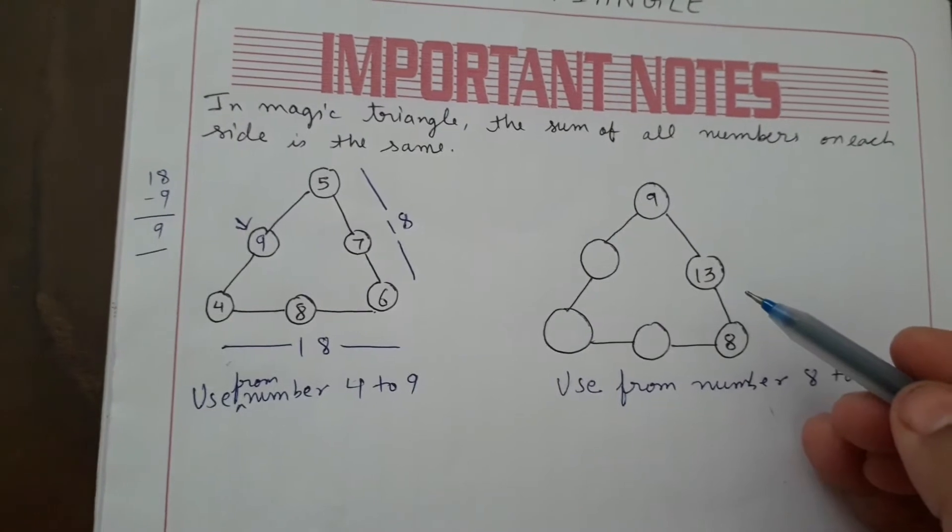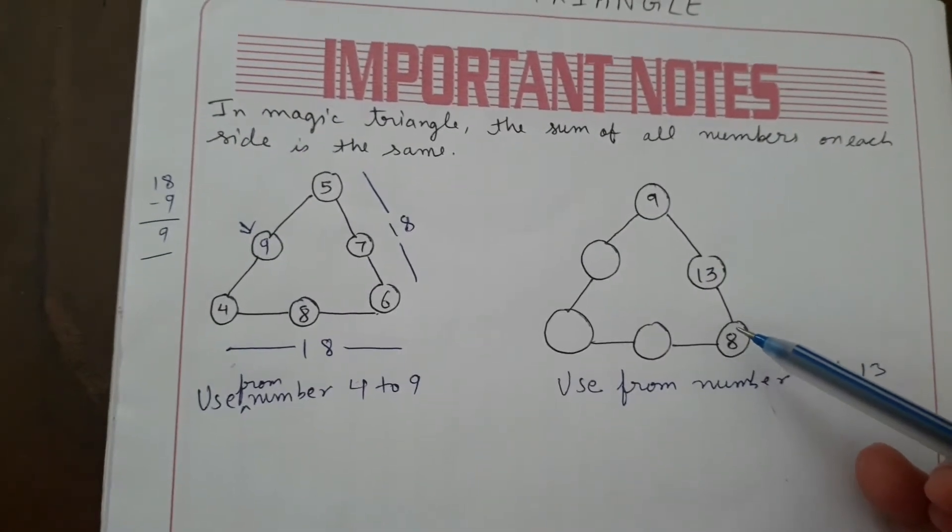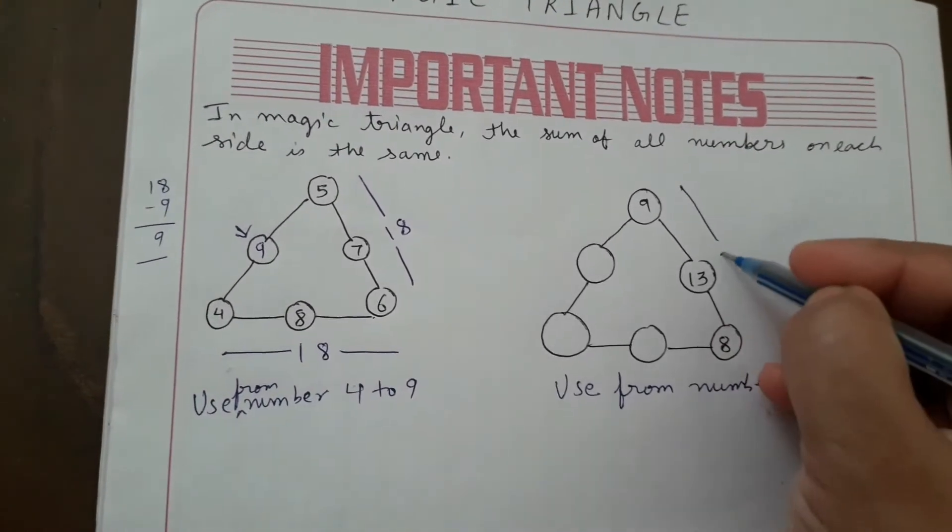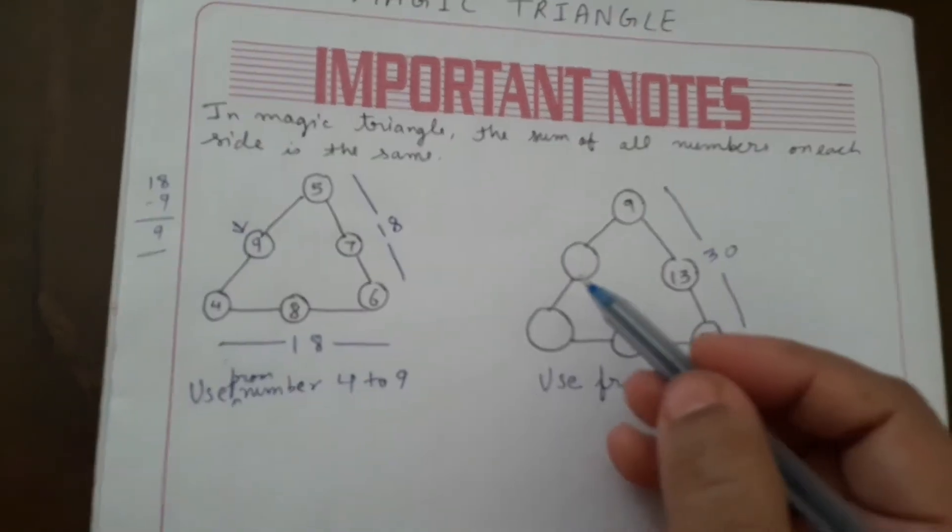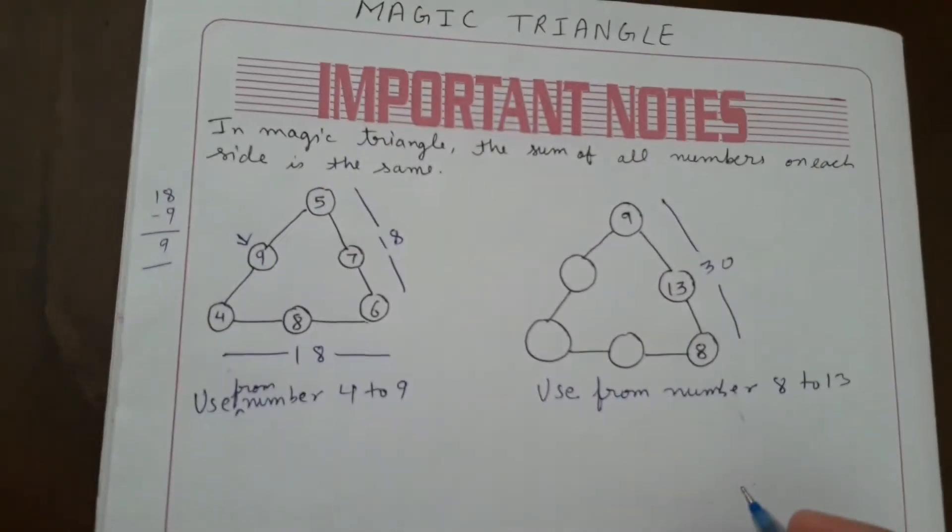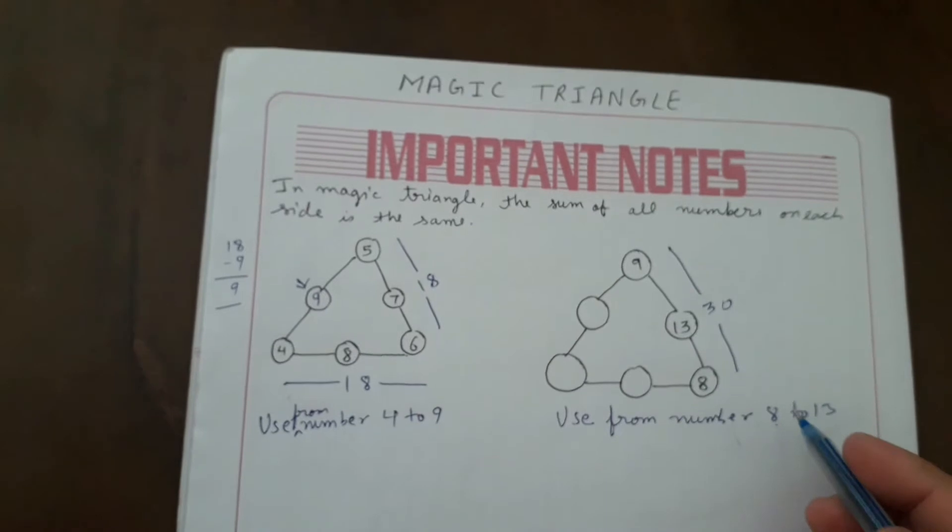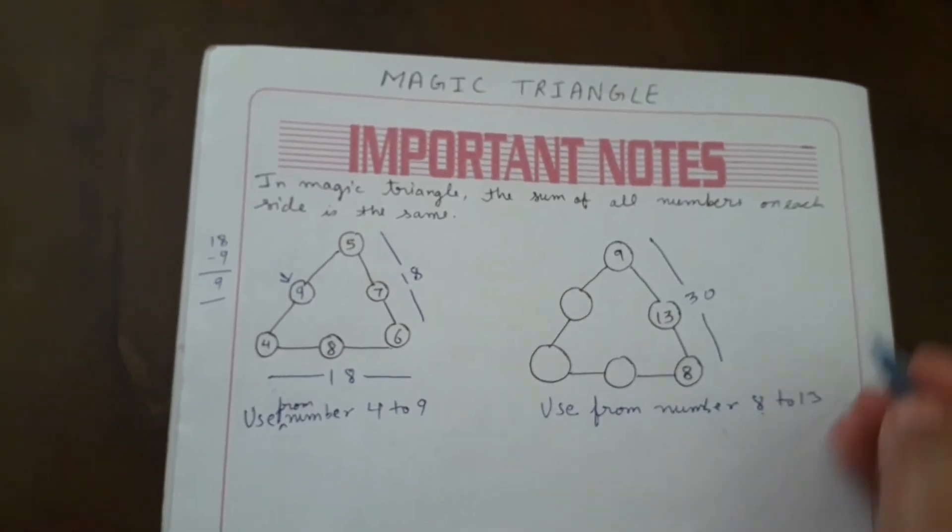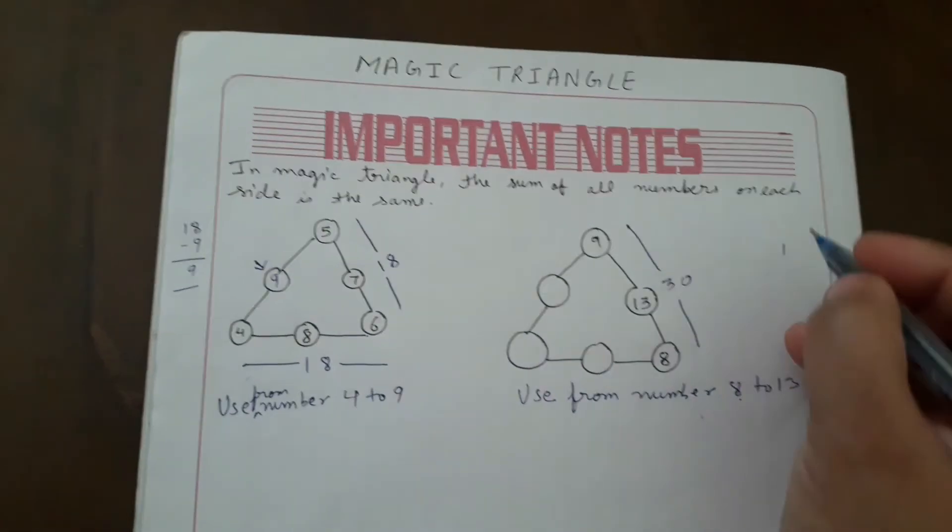Very first, add it: 9 plus 8 is 17, and 17 plus 13 is coming 30. Then what we will put here so that it will come 30 only? For that, use form number 8 or 13 - whichever number at the starting or ending point, first you add that.